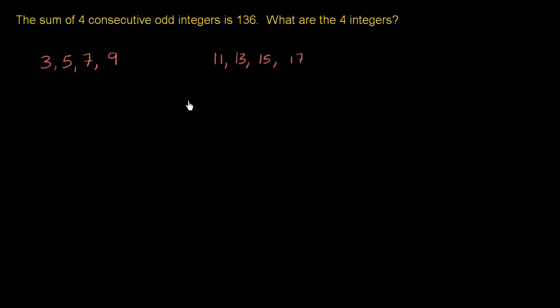An example of non-consecutive odd integers: if someone went from three straight to seven, these are not consecutive. The next odd integer after three is five, not seven. So these are examples of consecutive odd integers. These are not consecutive odd integers.